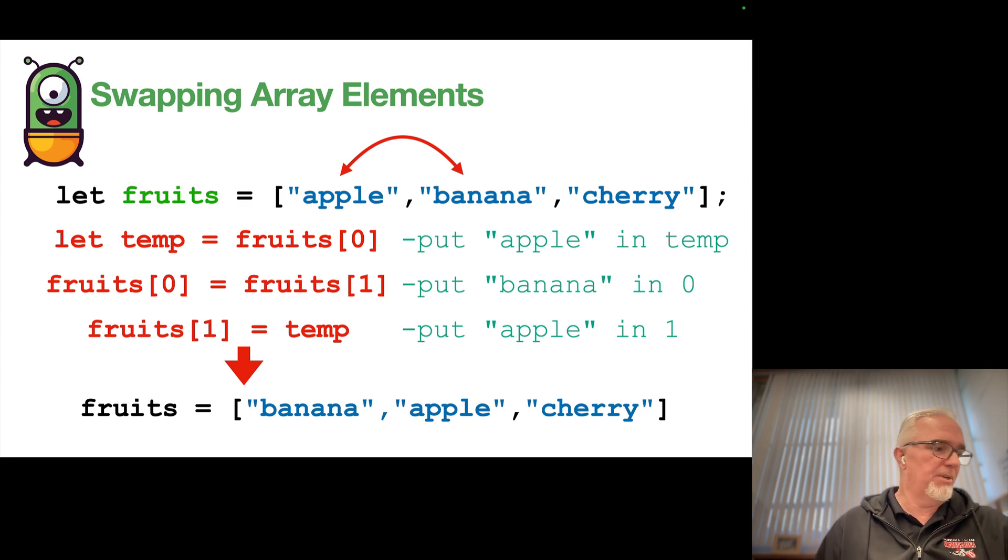And the resulting array after that code is banana, apple, and cherry. So let's go.